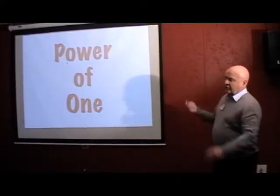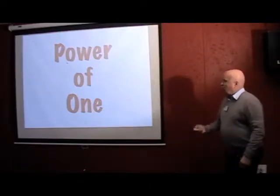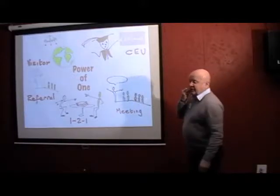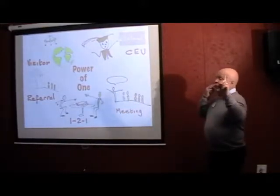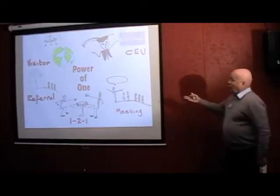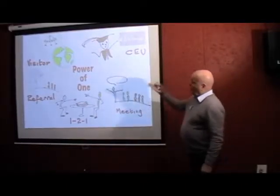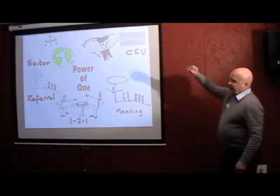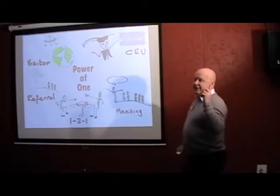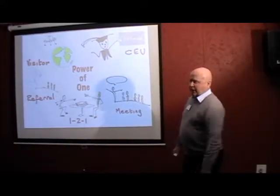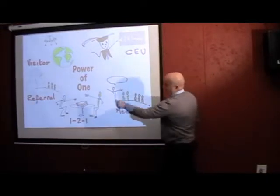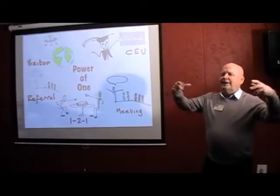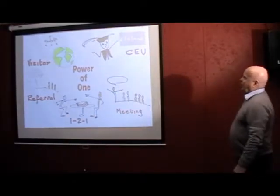My first slide says Power of One. What is Power of One? Power of One basically says each member commits to one CEU point per week - that's chapter education unit. One meeting per week, one one-to-one per week, and one referral per week. And then I've got at the top left there, one visitor per month. That's what you commit to in Power of One. So that's Power of One.